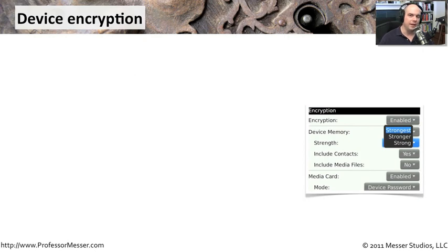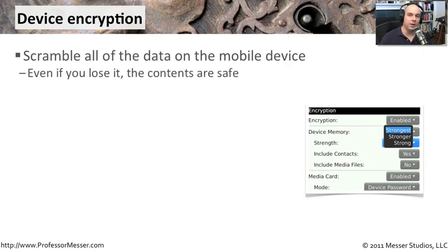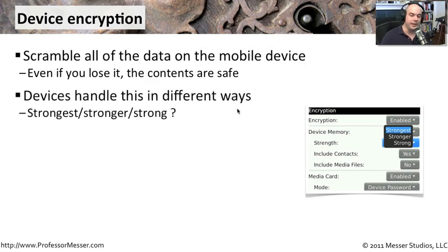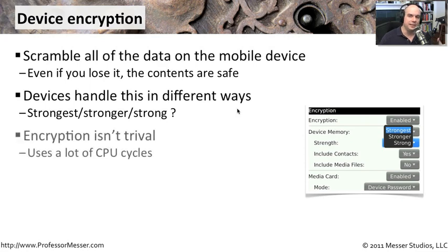Along the same lines, we have to think about how the data on this mobile device is stored. We want to be sure that nobody can gain access to that data in other ways. A lot of these devices will employ encryption that we can enable, and we can sometimes even set the amount of encryption on the device. Maybe we would like it to be the strongest encryption possible, or maybe a little bit weaker. There is encryption that has to take place every time you load and save data, and it's not a trivial process — there are a lot of CPU cycles involved.